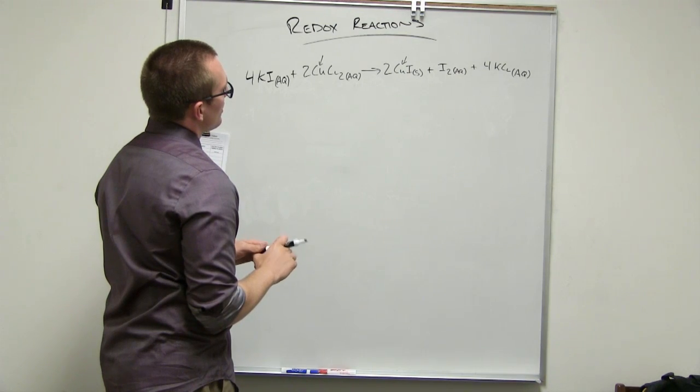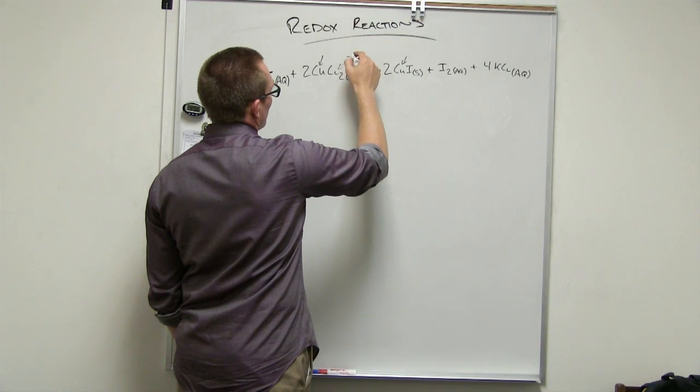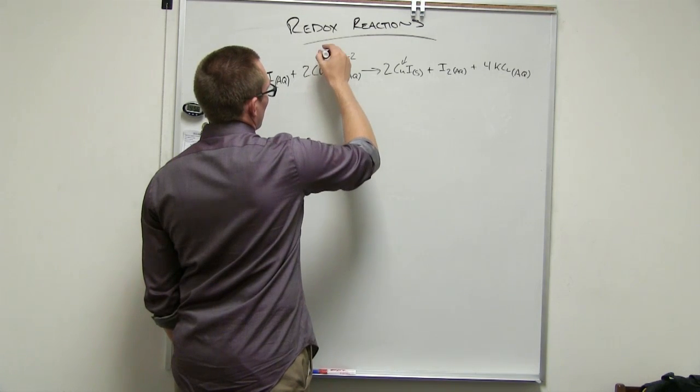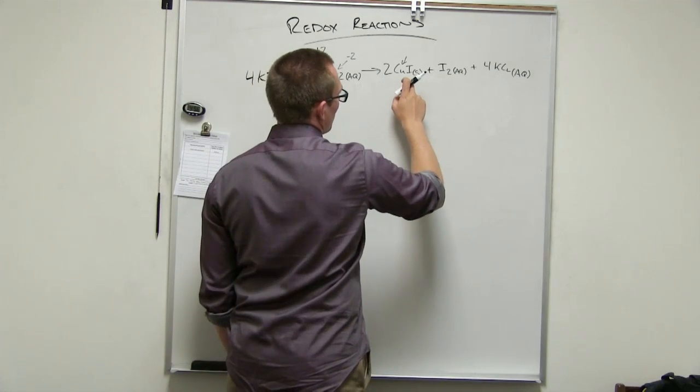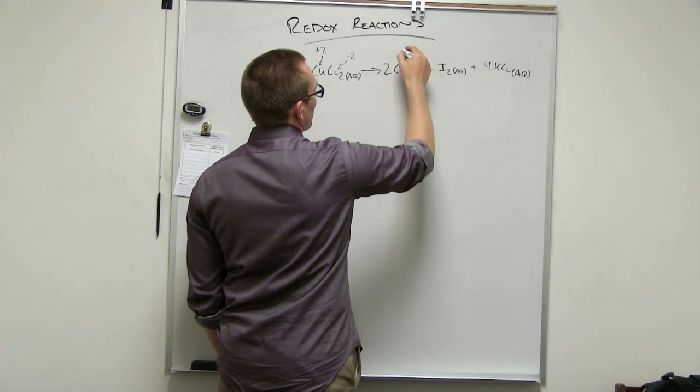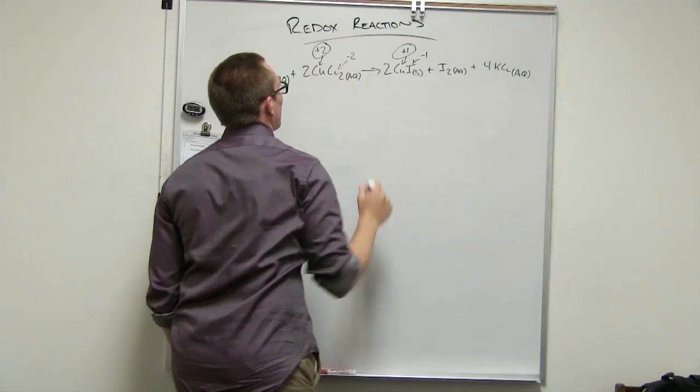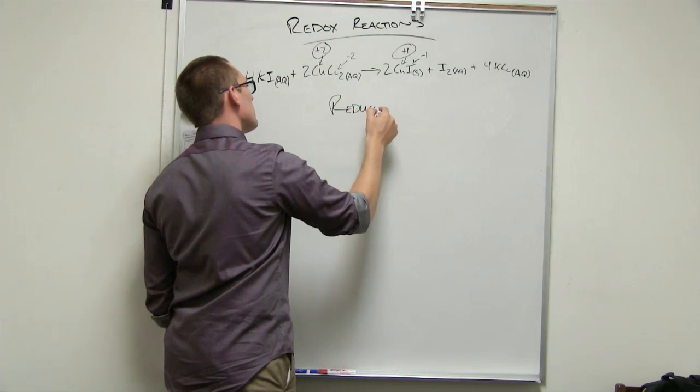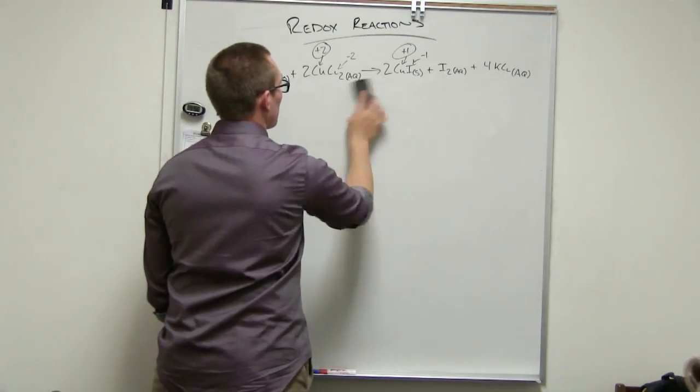So... Chlorine is going to be what? Negative 1. Negative 1, and there should be a total of... Negative 2. Negative 2, because there's two of them. Which then makes the copper... Plus 2. Plus 2. Okay. And then over here, it's just Cu and I, right? Mm-hmm. So it would be a negative 1 and a plus 1. Right. So it was reduced. Reduced. Yep. Okay.